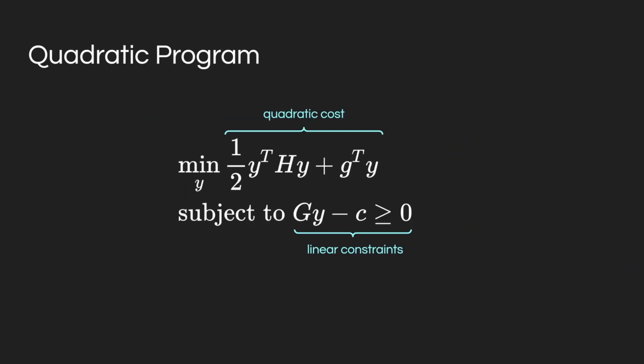RELUQP achieves this by reformulating the alternating direction method of multipliers, or ADMM, for GPUs.